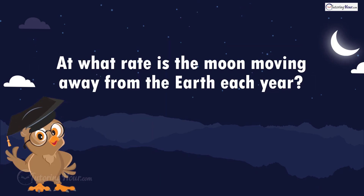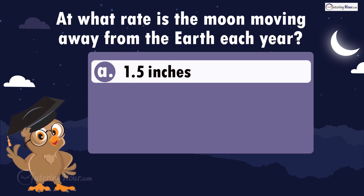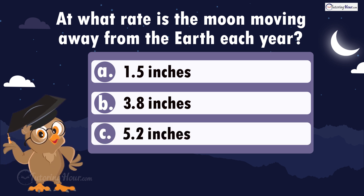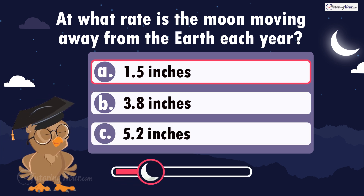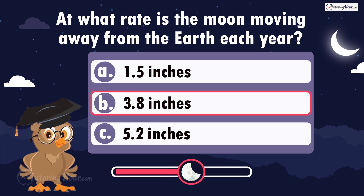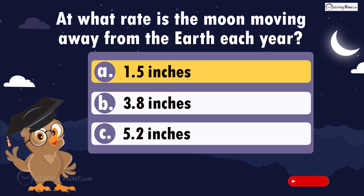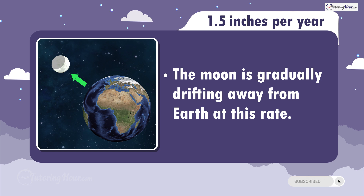At what rate is the moon moving away from the Earth each year? Is it A, 1.5 inches; B, 3.8 inches; or C, 5.2 inches? The correct answer is 1.5 inches per year. The moon is gradually drifting away from Earth at this rate.